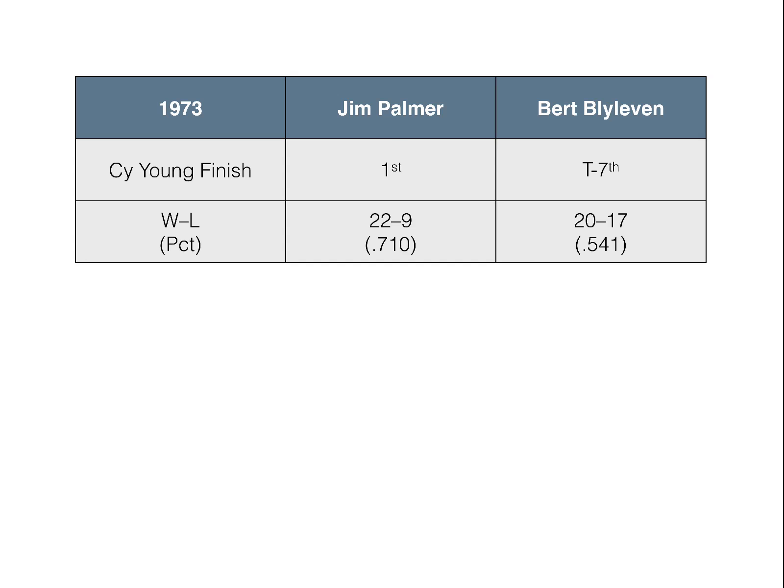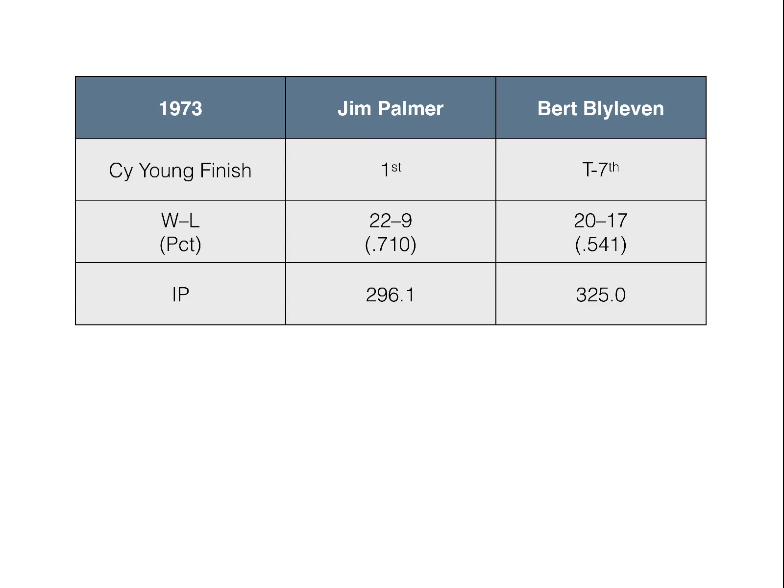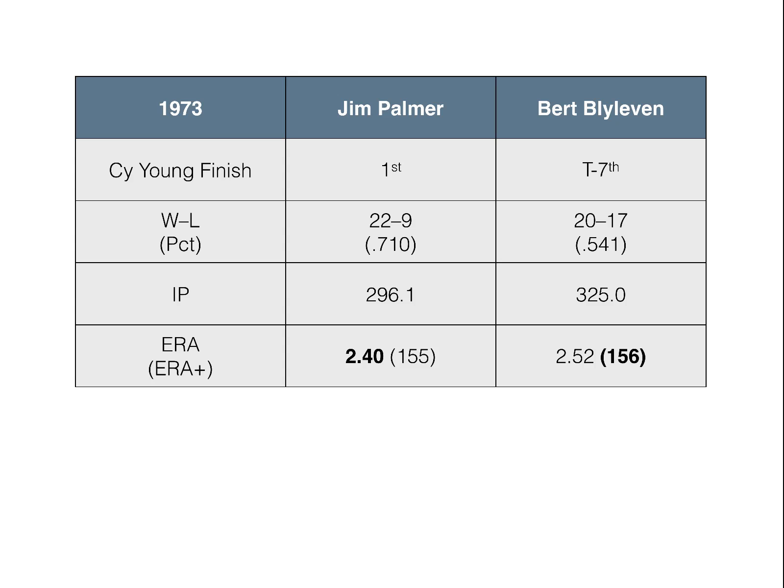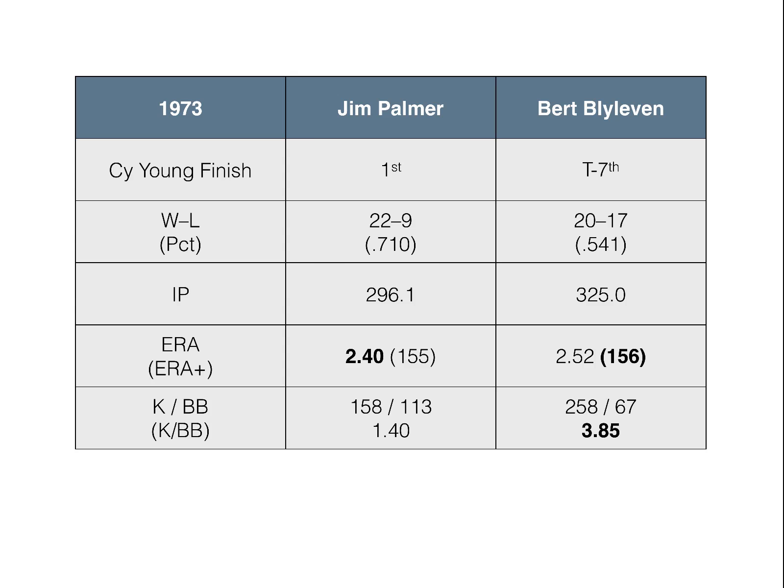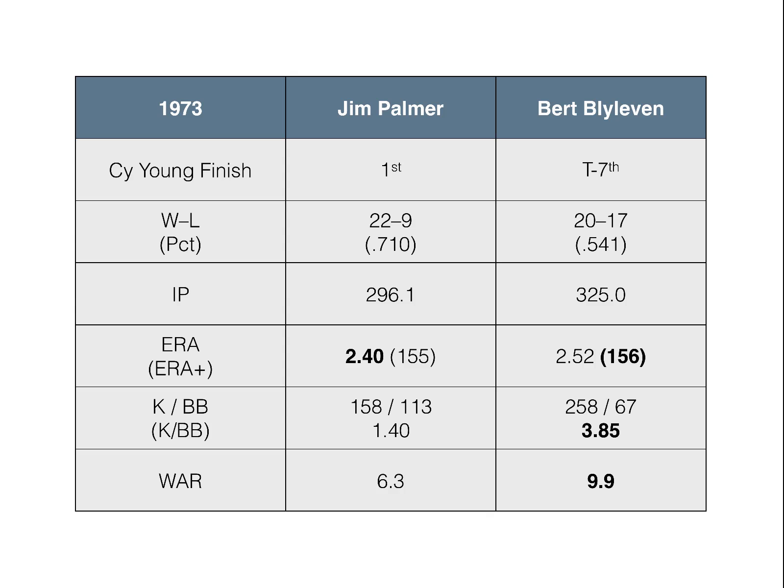Palmer led the league in ERA with 2.40, but Blyleven was right behind him, and because of the adjustments made for park, he actually had a very similar — in fact a little bit better — ERA+. On strikeouts and walks, Palmer only struck out 158 and walked 113, so just 1.4 strikeouts per walk. Blyleven led the league in strikeouts per walk — he fanned 258 and walked just 67. Their Wins Above Replacement: Palmer had a very solid 6.3, but Blyleven's was actually 9.9. By looking at the raw stats — a very similar ERA+, in more innings — I would assume Blyleven would have a higher WAR, and would probably deserve to win. But where's this huge discrepancy coming from?